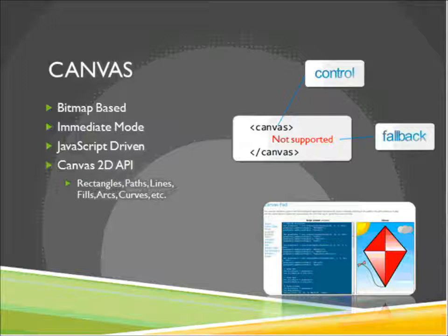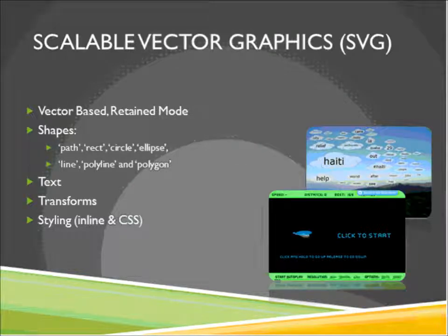Now let's talk briefly about Canvas and Scalable Vector Graphics — we'll dive deeper in session three. A Canvas is an element on our page that is bitmap-based, so we can draw things in that window. There's an immediate mode — when something is drawn, it shows up immediately. You can use JavaScript to interact with the Canvas, and there's a 2D API you can code against, allowing you to draw rectangles, paths, lines, arcs and curves. SVG — Scalable Vector Graphics — is vector-based, allowing scaling and resizing of your page.